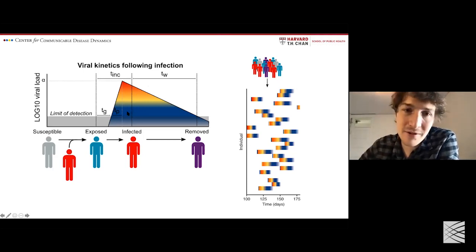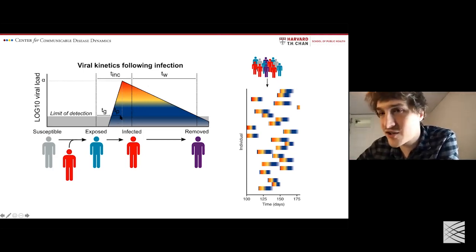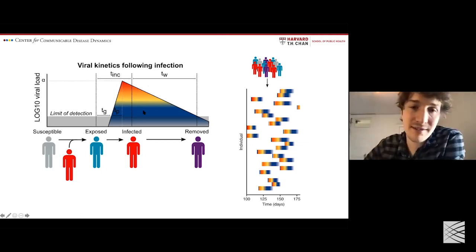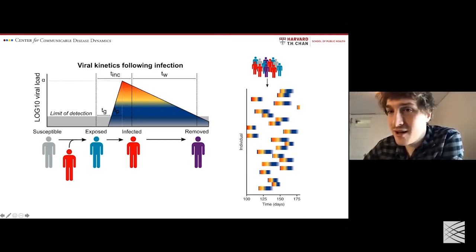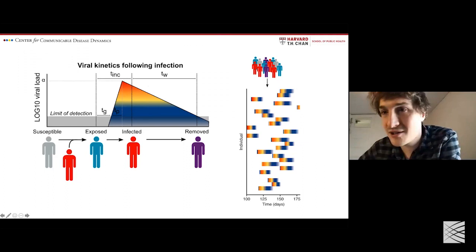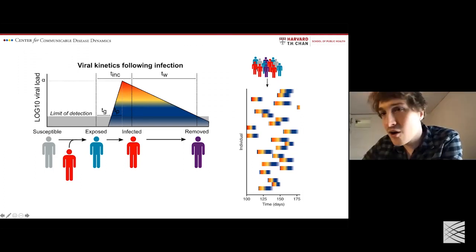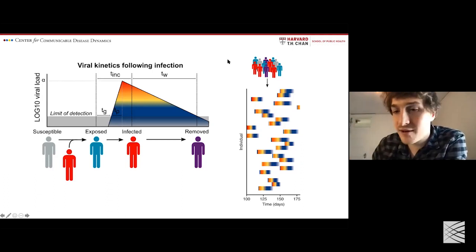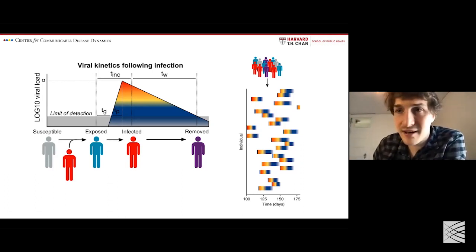During an epidemic, we have people at different states of infection over time. A generic population during an epidemic includes people who are infected, exposed, and recovered. If we simulate their viral trajectories over the course of an epidemic, we see a massive mixture of viral loads over time — that's what we're interested in getting at.